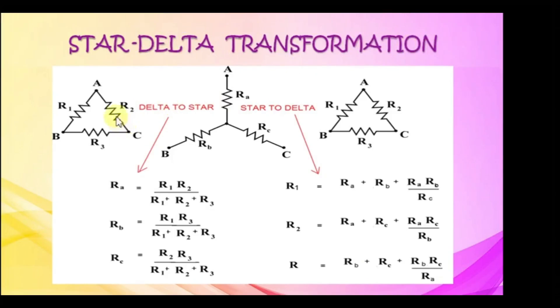Star-delta transformation. Take a delta connection with resistances R1, R2, R3. Take a star connection with resistances RA, RB, RC.